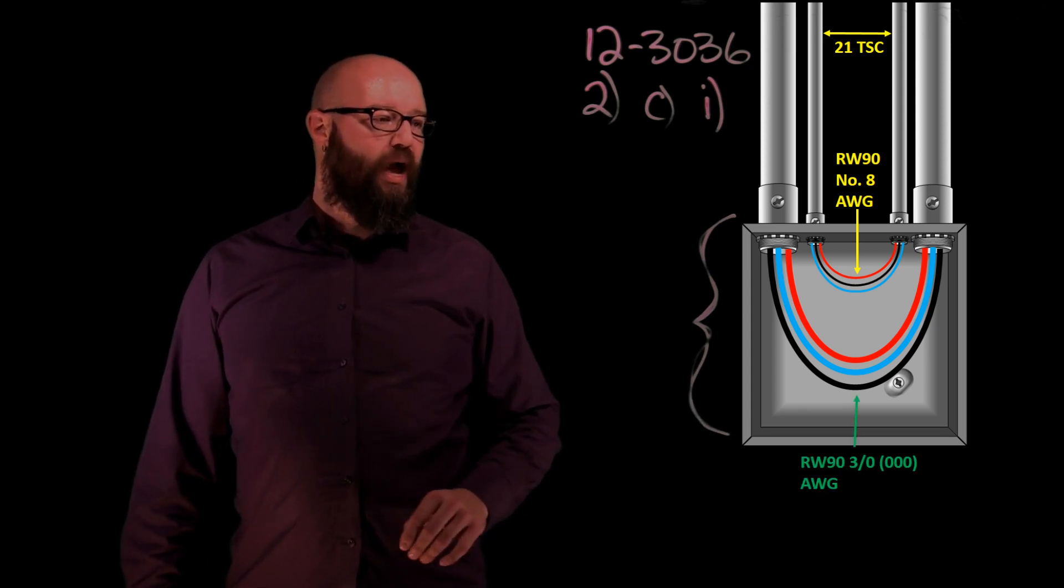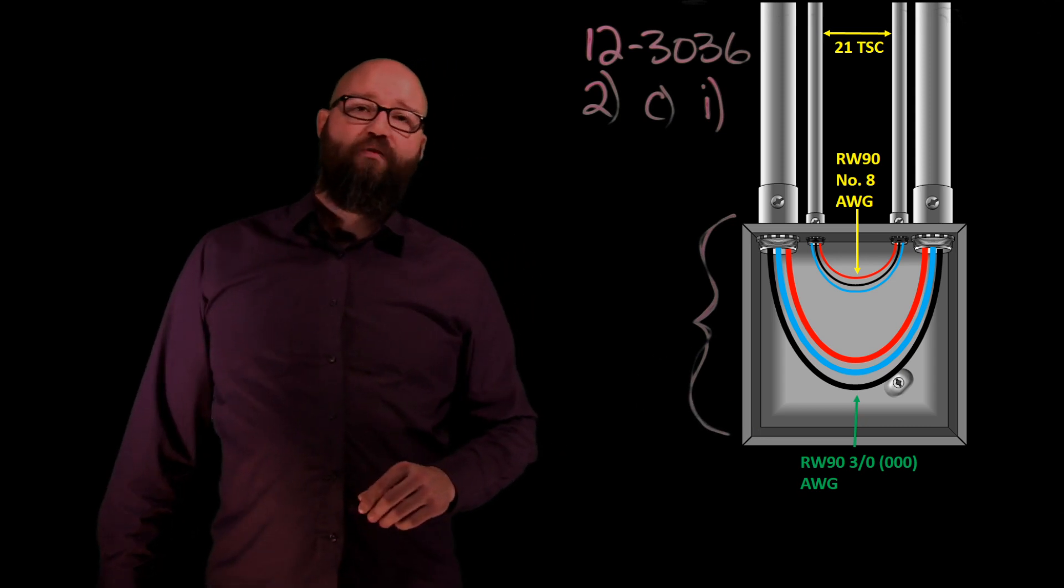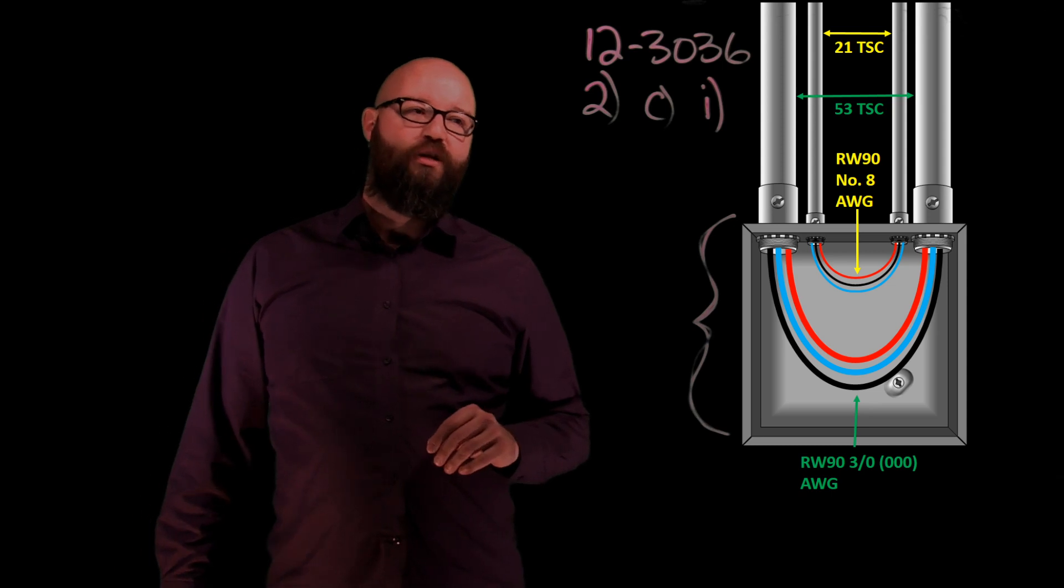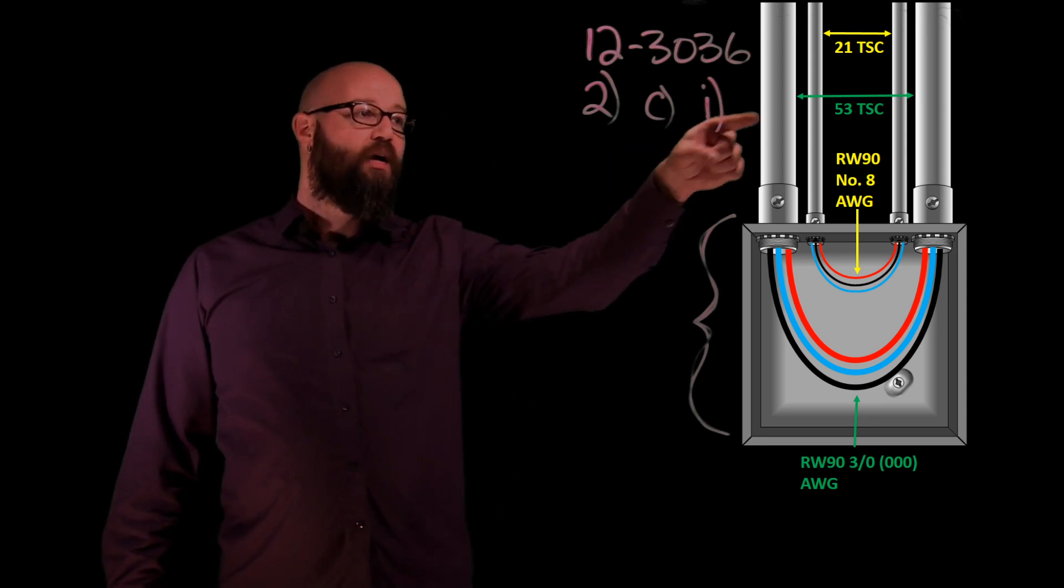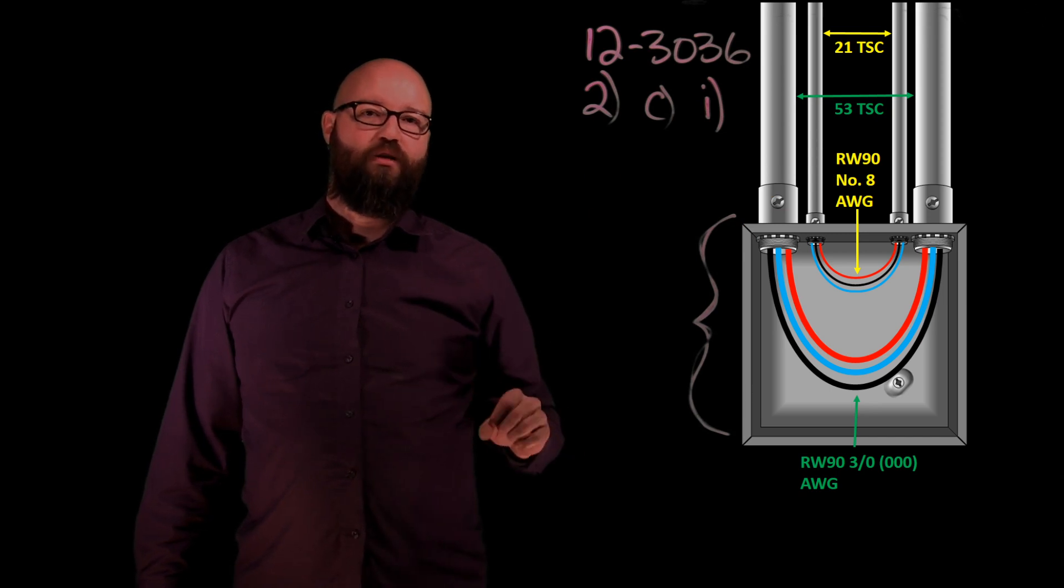What we're concerned with is these larger conductors here. So in these larger conductors we have three of these three ought AWG conductors and if we go to size the conduit again from table six, what we end up with there is a 53 trade size conduit. So my larger conduits are 53 trade size conduit, that's what we're going to start with.